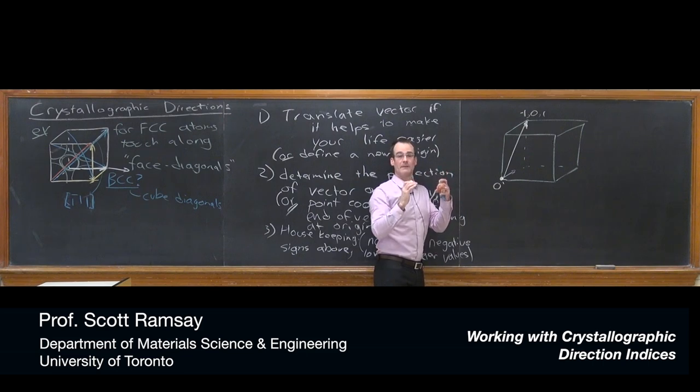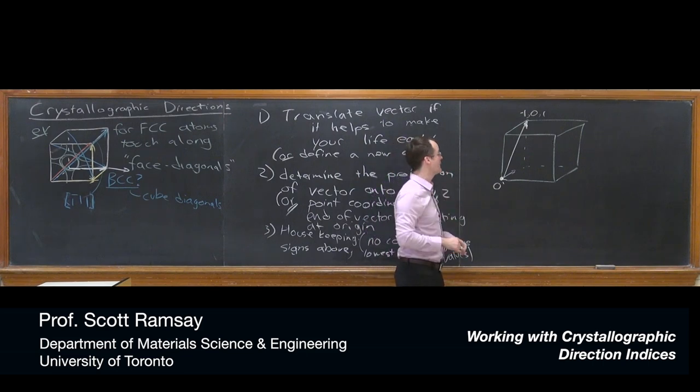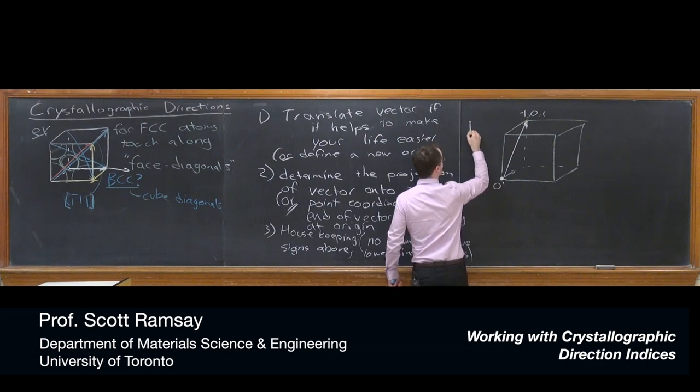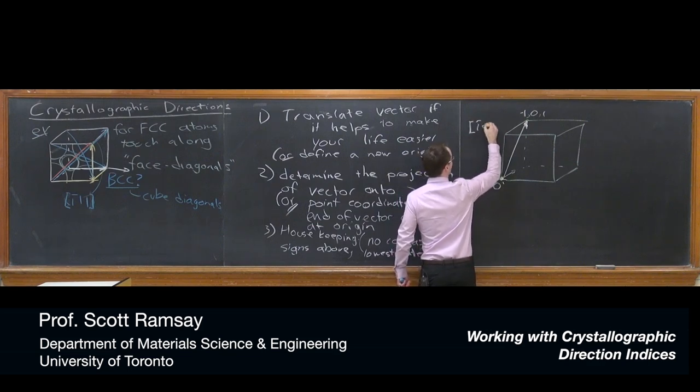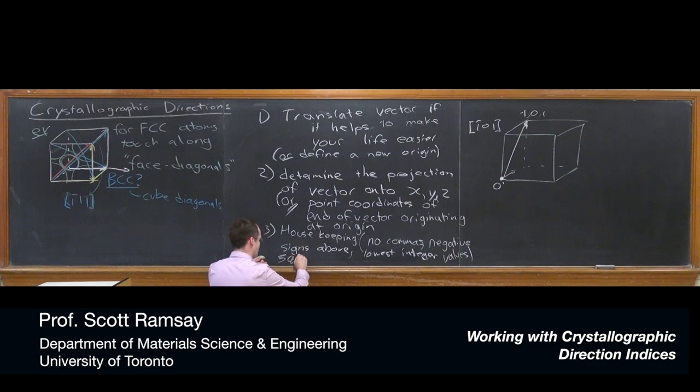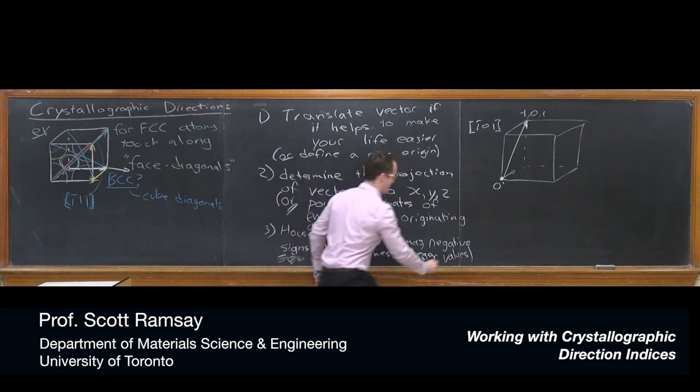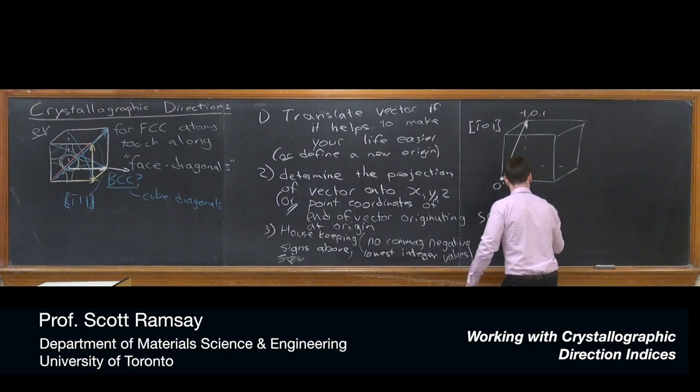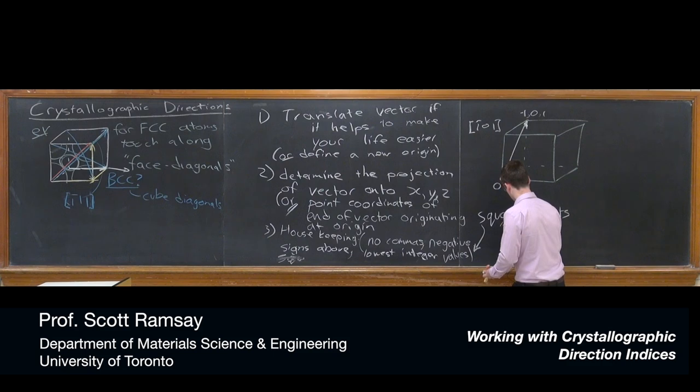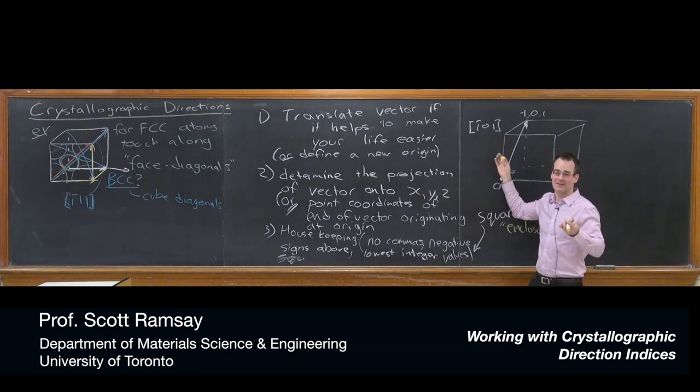Point coordinates, don't put parentheses around it because that will confuse things with planes, which you'll see in the other video. So just write point coordinates like that if you need to write point coordinates. And then this vector becomes the 1 bar, 0, 1 vector. And in fact, I forgot in my housekeeping here, square brackets. I'm going to write that over here where I have some more space, square brackets. And this is sometimes referred to as the enclosure. Just in case you see that term, these little brackets are enclosing the indices. Again, that's the final housekeeping step. We enclose it in square brackets.